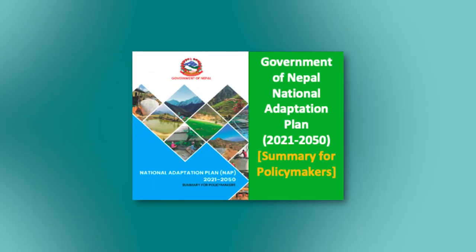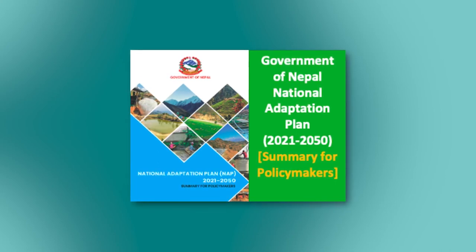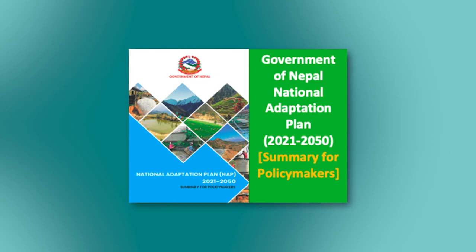If you've already created a NAP for your country, we encourage you to consider how you can augment the future climate projection section with data from Climocast. If you haven't created a NAP yet, you can use existing NAPs — such as Nepal's — as a reference, set the conditions you think are most valid using the output data from Climocast, and insert the output maps and graphs.